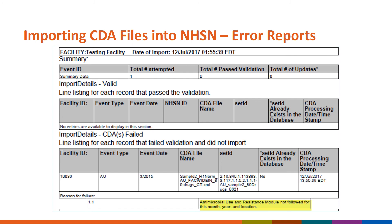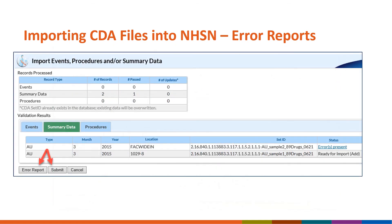Remember, NHSN will not accept any CDA files for locations, events, or summary types that aren't listed in the monthly reporting plan. In the event that some of the CDA files in your zip file passed and others failed, both the error report and submit buttons will be enabled. Clicking submit will only submit the files that passed validation. The files that failed will need to be fixed and resubmitted.